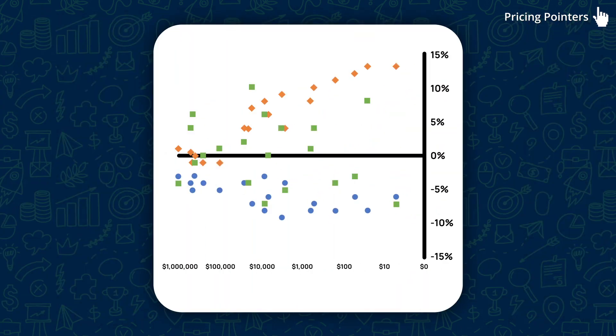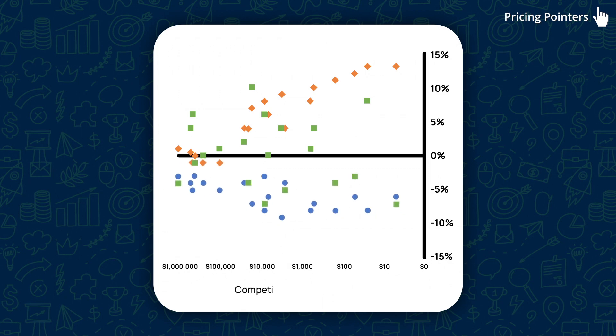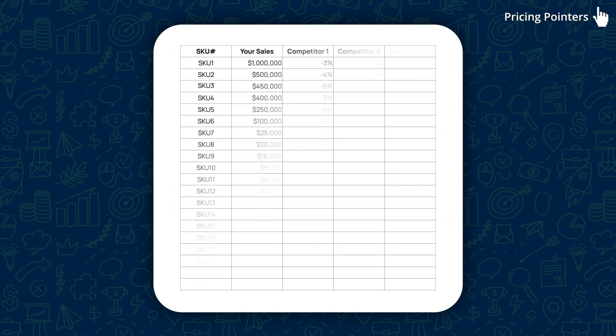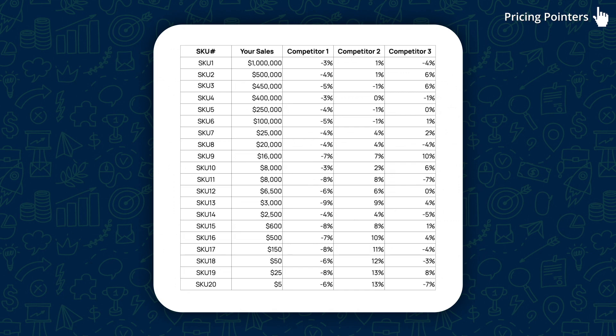Dots above the x-axis mean the competition is priced above me. If a dot is below the x-axis, they're priced below me. Each color and shape differentiates a competitor so we can pick it up quickly visually. For those who prefer tables, here's a sample format: your SKUs, the competitors, and the competitor price difference.